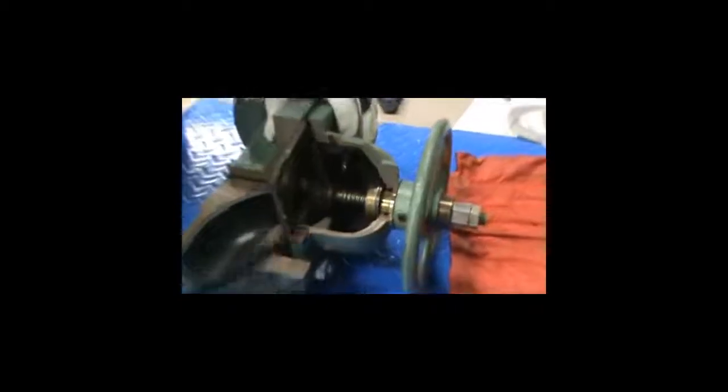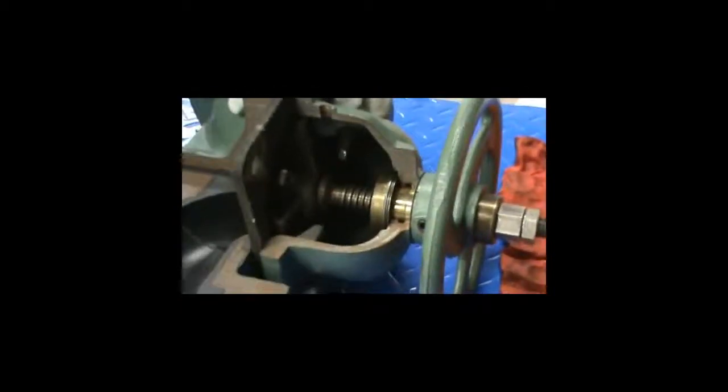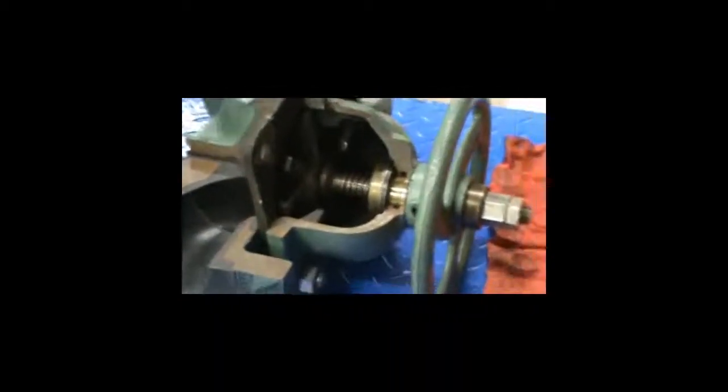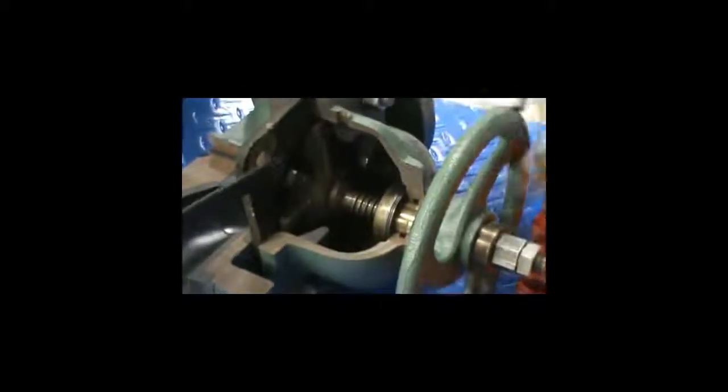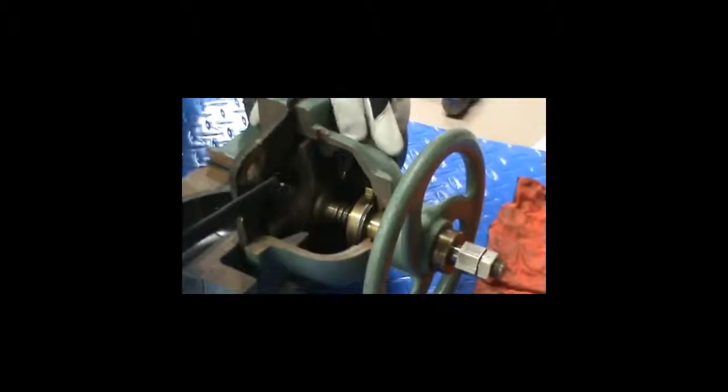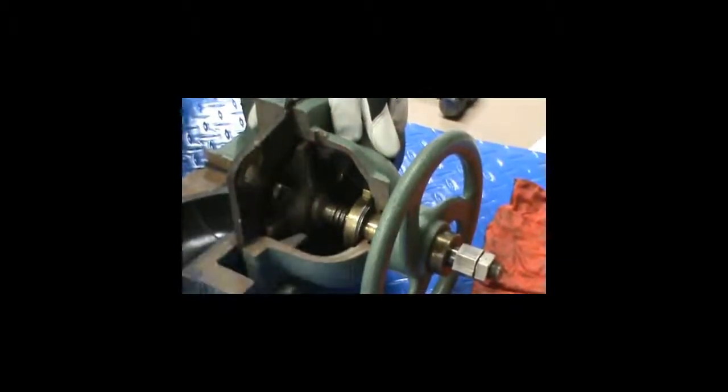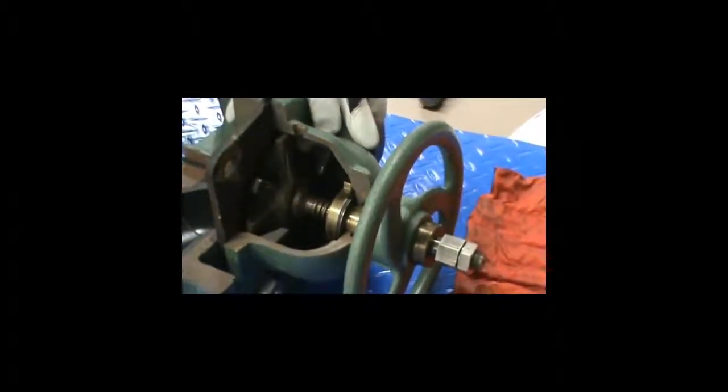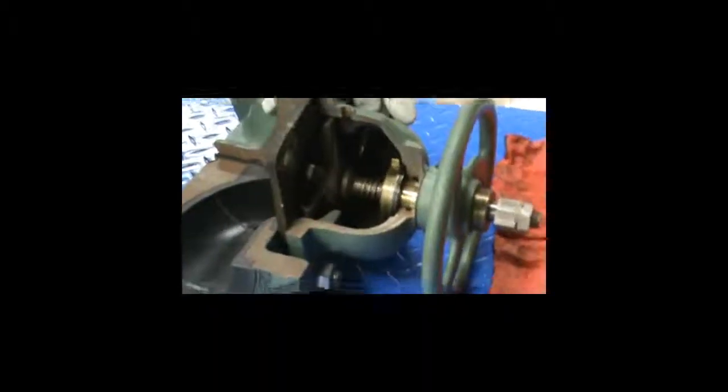Other than that the major components are the body which is right here and the bonnet. This finger, this piece that looks like a bunch of fingers, this is called the compressor. That is attached to the stem which is actually what presses the diaphragm into the weir.